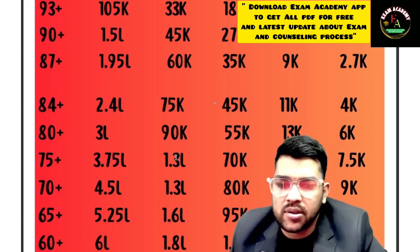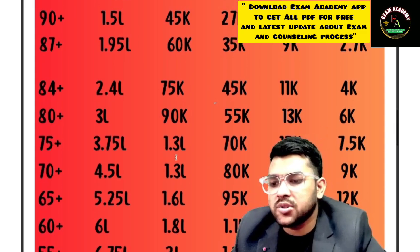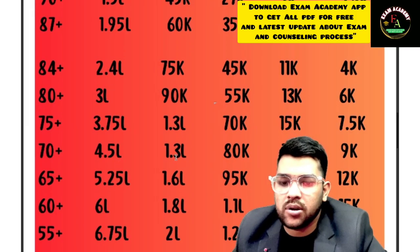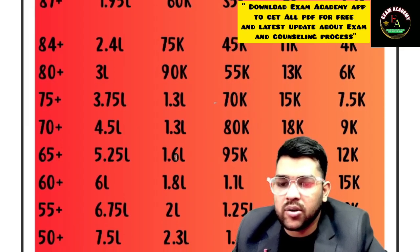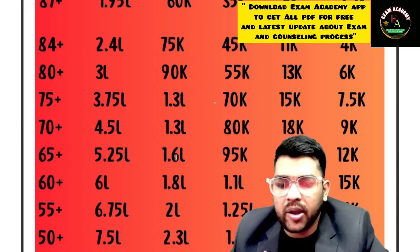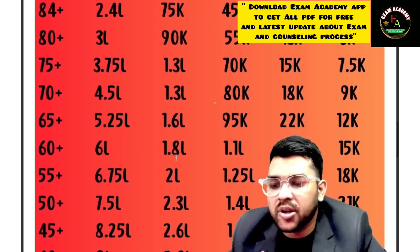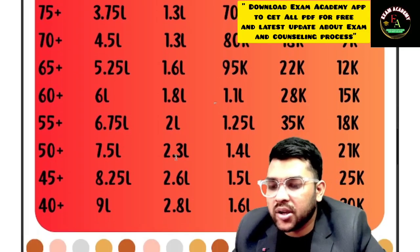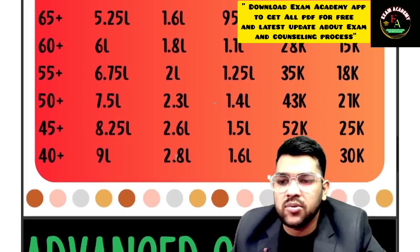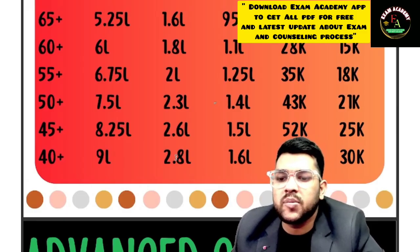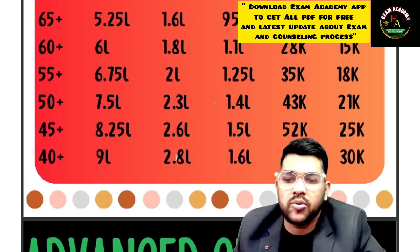For 70 percentile — General: 4.5 lakh, OBC: 1.3 lakh, EWS: 80,000, SC: 18,000, ST: 9,000. For 65 percentile — General: 5.25 lakh, OBC: 1.1 lakh, EWS: 1.6 lakh, SC: 95,000, ST: 12,000. For 60 percentile — General: 6 lakh, OBC: 1.8 lakh, EWS: 1.1 lakh, SC: 28,000, ST: 50,000. For 55 percentile — General: 6.75 lakh, OBC: 2 lakh, EWS: 1.25 lakh, SC: 35,000, ST: 80,000. For 40 percentile — OBC: 2.8 lakh, EWS: 1.6 lakh, SC: 62,000, ST: 30,000.